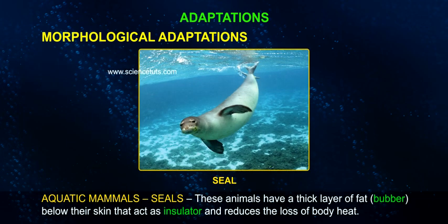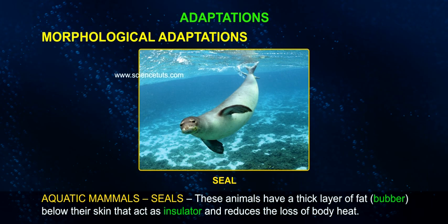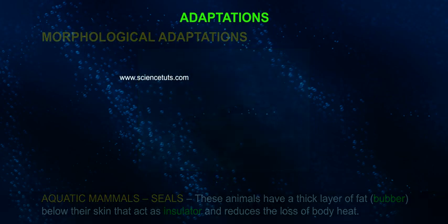Aquatic mammals such as seals have a thick layer of fat, blubber, below their skin that acts as an insulator and reduces the loss of body heat.